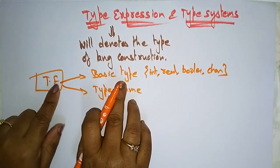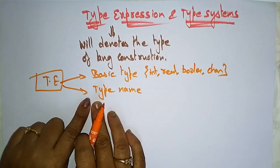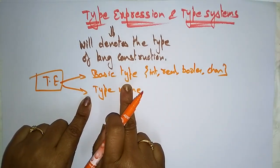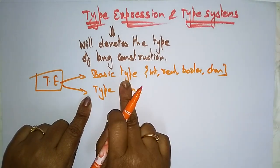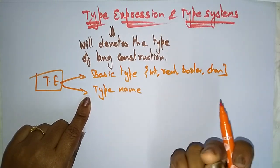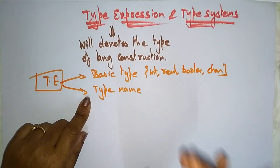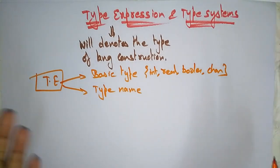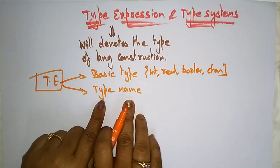There are two types of type expressions: basic type and type constructor. The basic type is a type expression for integers, real, boolean, and character. The basic type void represents the empty set and allows statements to be checked — void means it doesn't return anything. The type expression can also be associated with type names, which are type constructors.